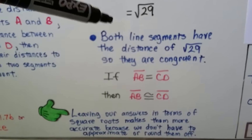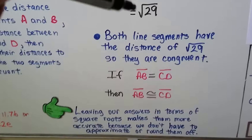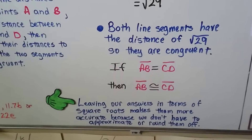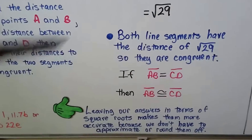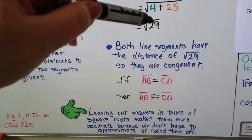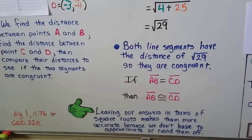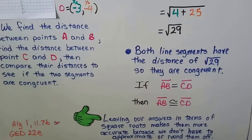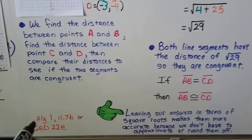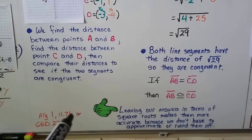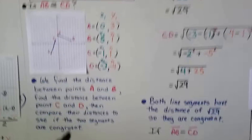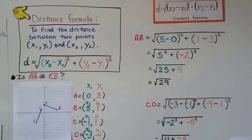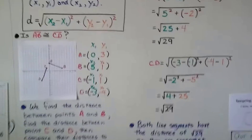Leaving our answer in terms of square roots makes it more accurate because we don't have to approximate or round off. 29 is not a perfect square — we can't find a number multiplied by itself that equals exactly 29. You can also watch Algebra 1 lesson 11.7b or GED video 22e to see more about the distance formula.